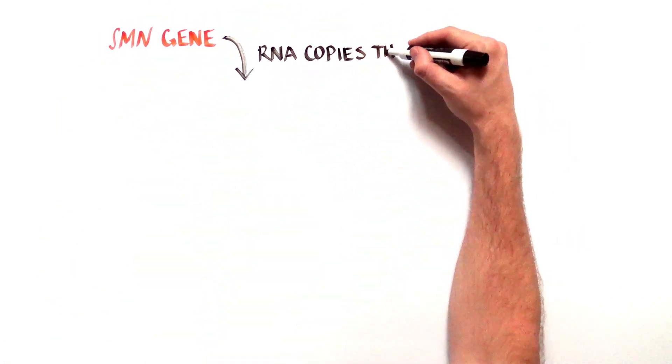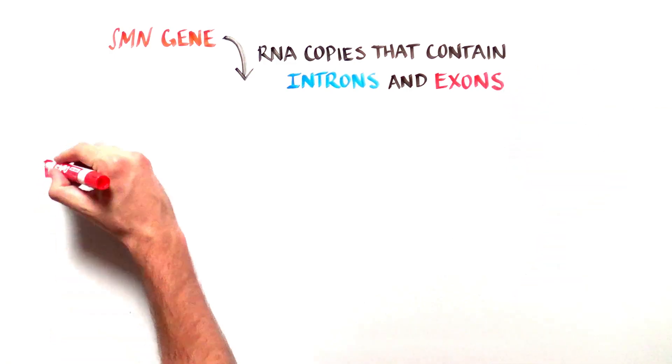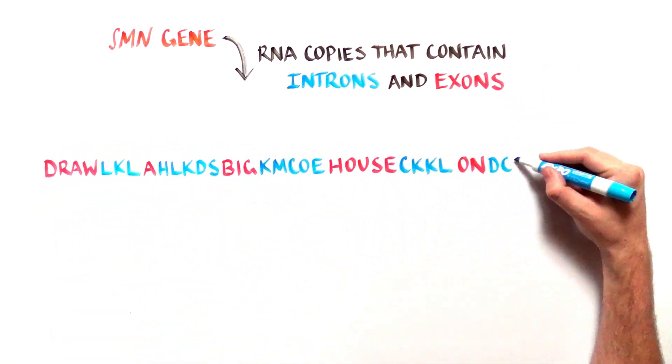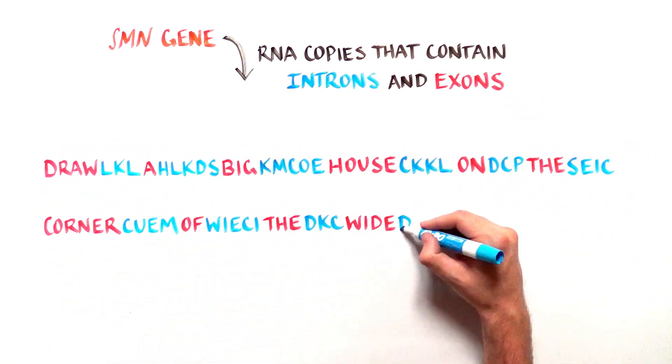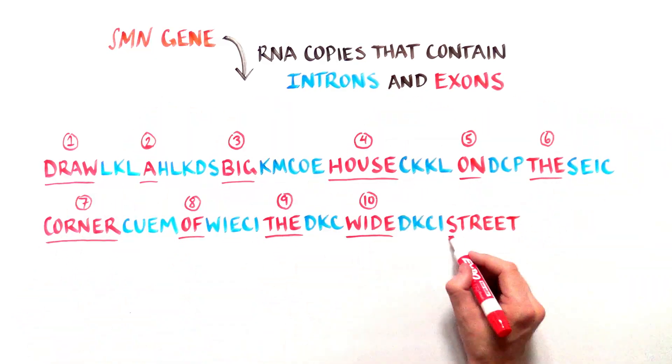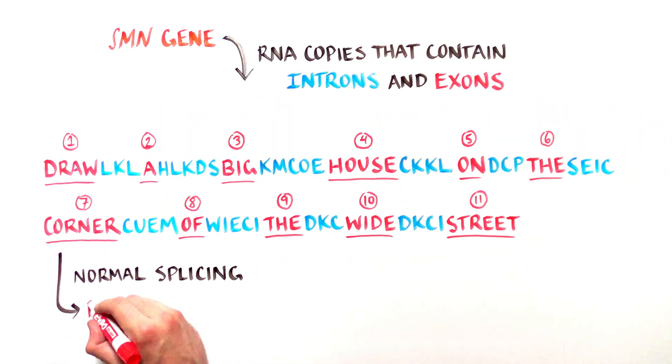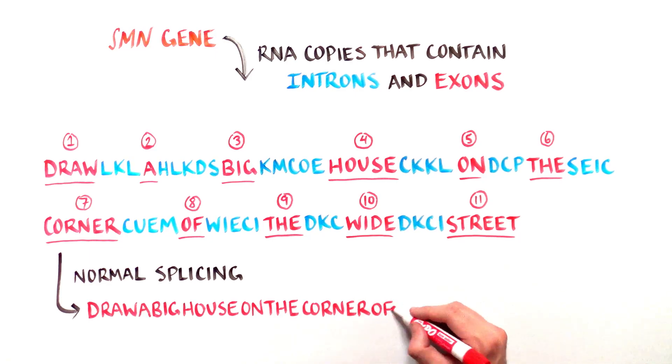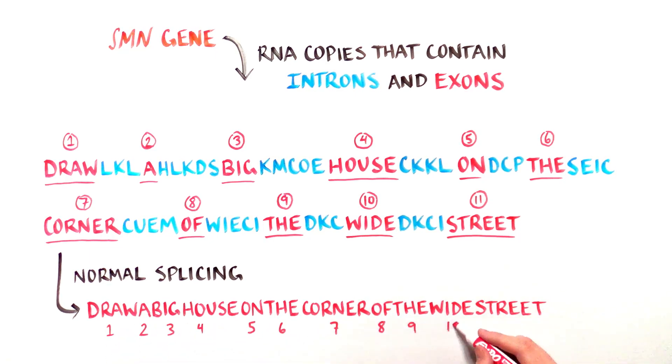Let's say the SMN gene generates RNA copies made up of introns and exons like this. Normal RNA splicing would delete the introns, the gibberish letters in blue, and leave only the exons, the red letters, generating the following message: draw a big house on the corner of the wide street.